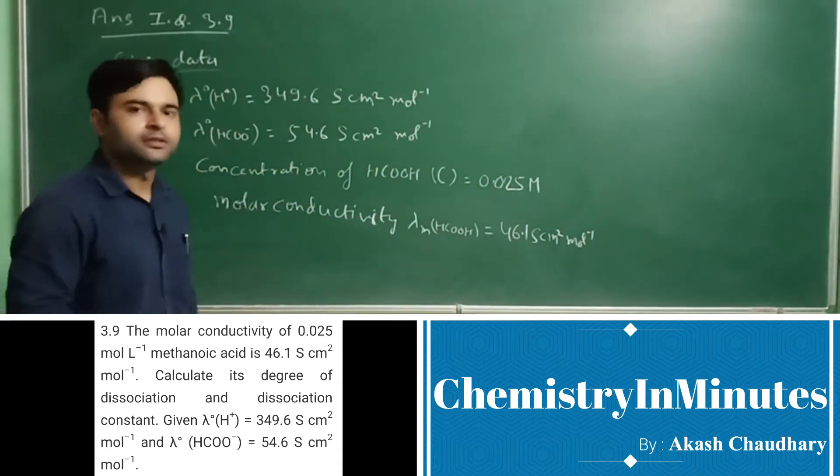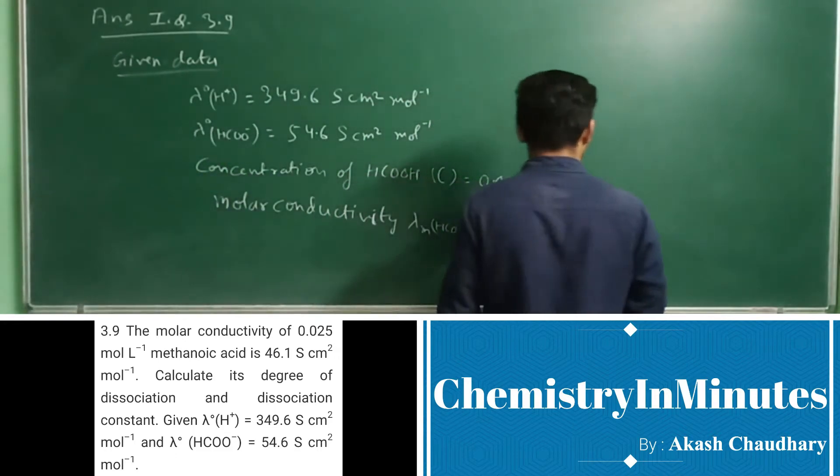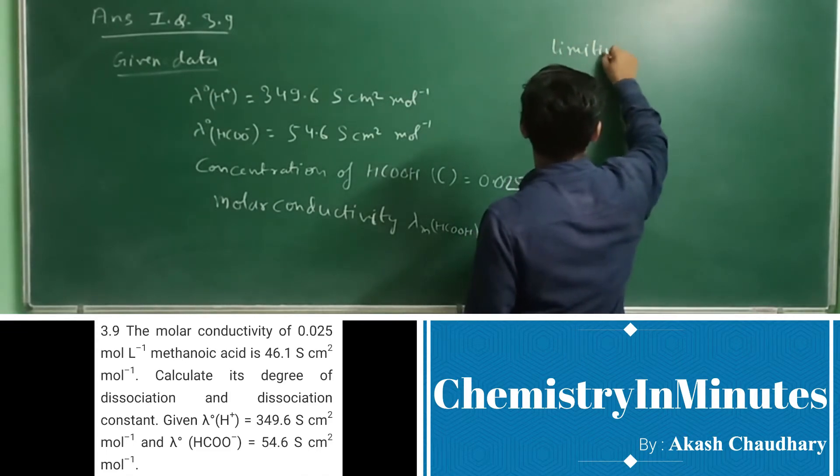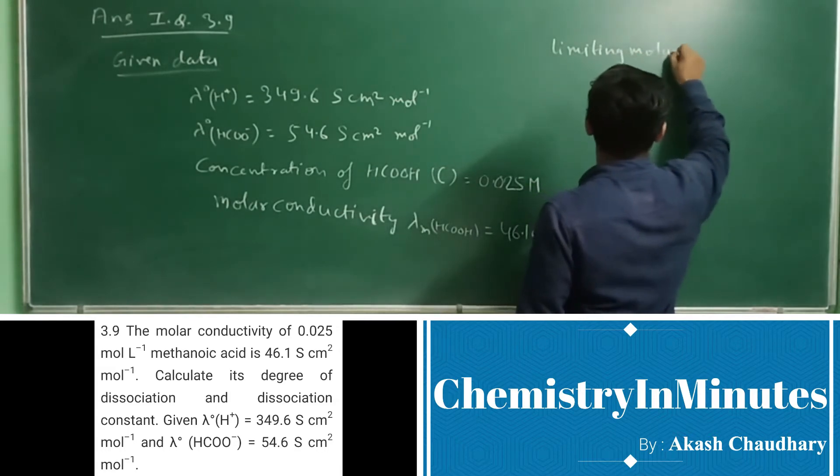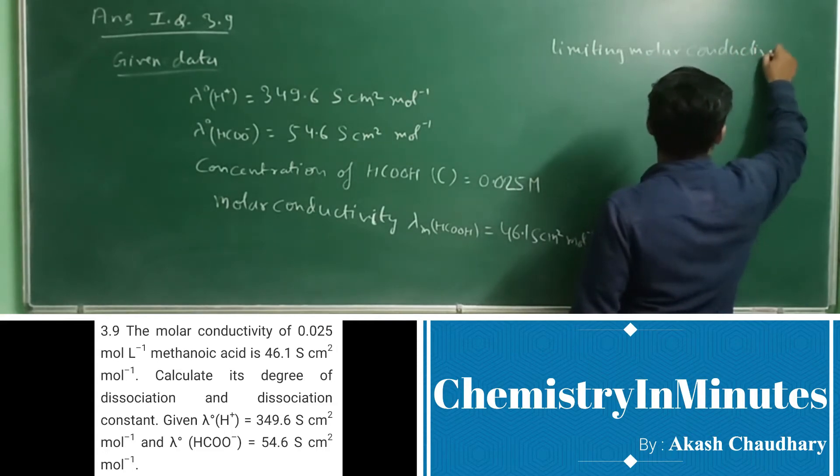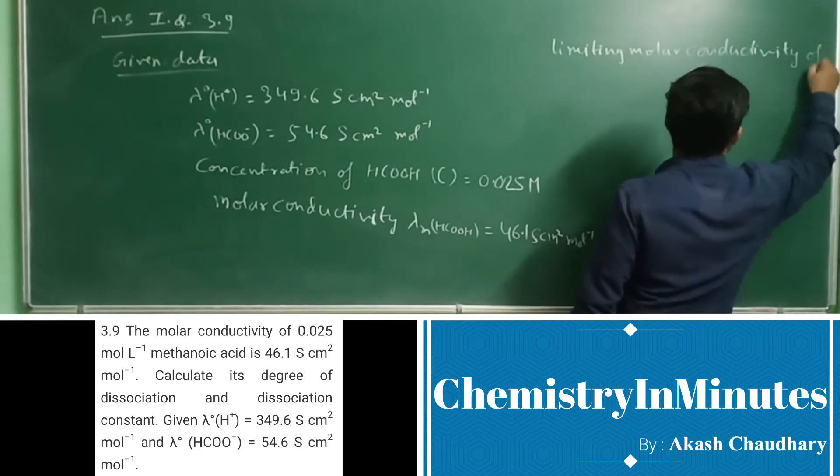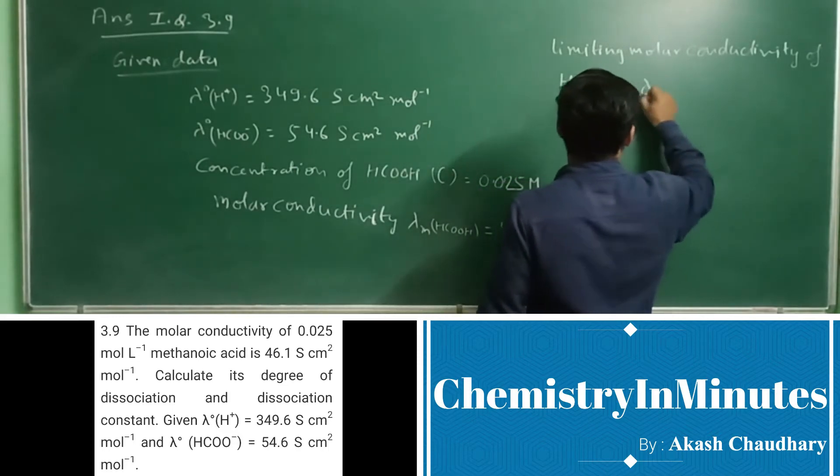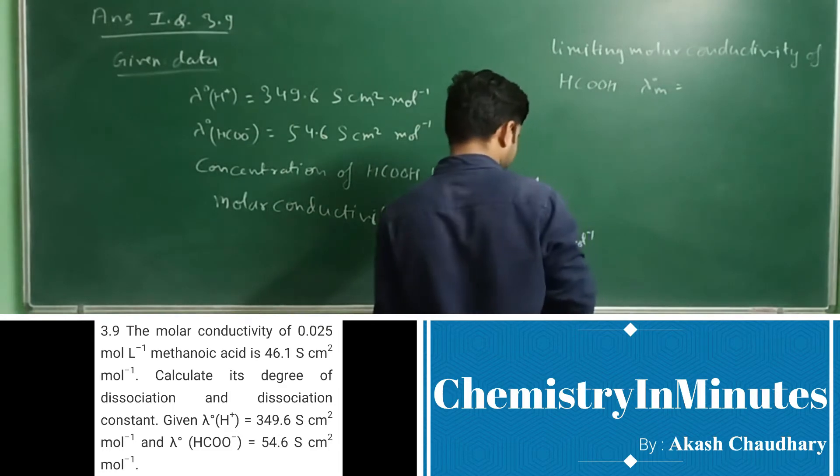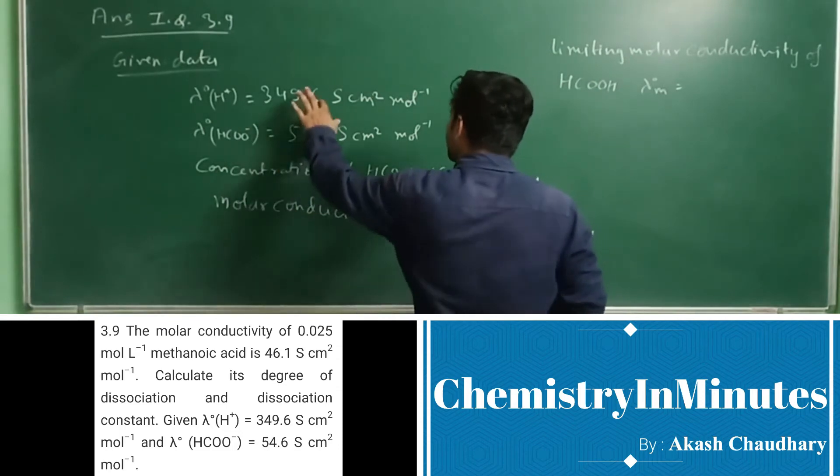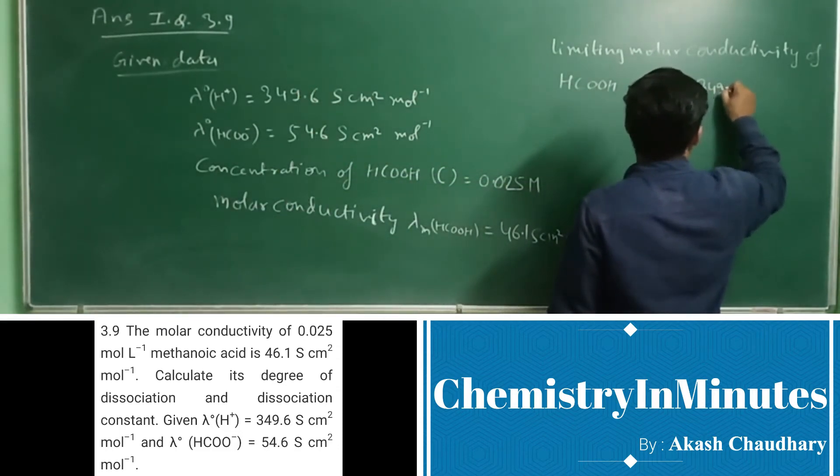Now first, we will calculate limiting molar conductivity of methanoic acid, that is HCOOH. Lambda naught M equals the sum of limiting molar conductivities of these two ions, that is 349.6 plus 54.6.